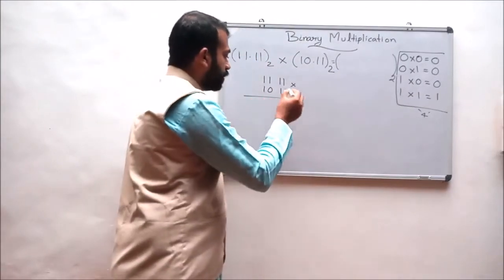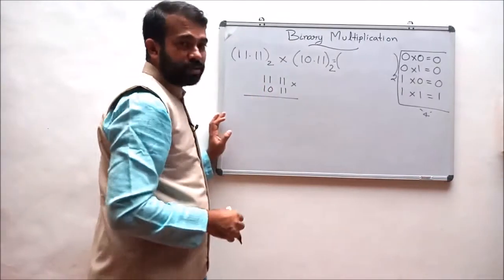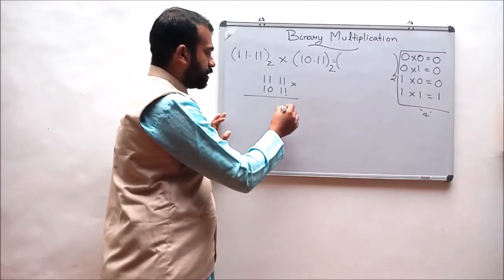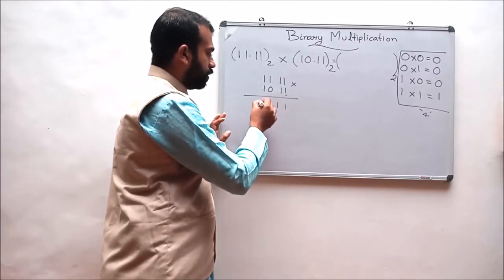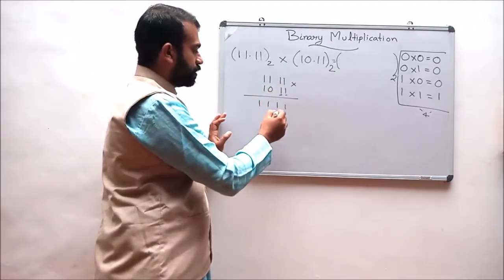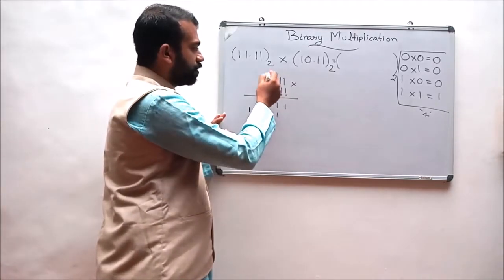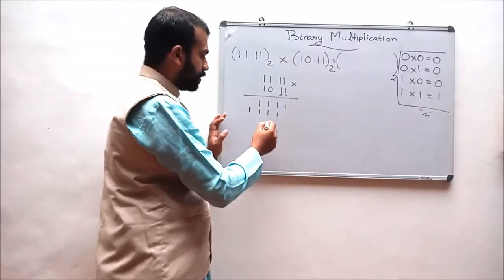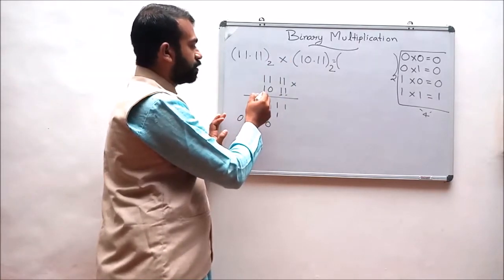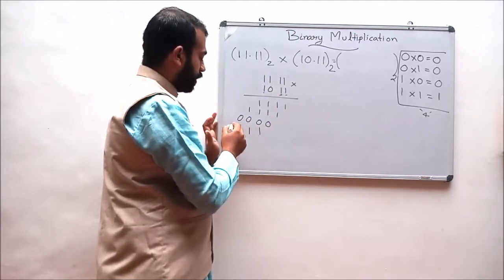By removing the fractional point and multiplying: 1 multiplied with this number results in 1, 1, 1, 1. Again, 1 multiplied with this number results in 1, 1, 1, 1. When 0 is multiplied with this number that results in 0, 0, 0, 0. And finally, when 1 is multiplied with this number it results in 1, 1, 1, 1.